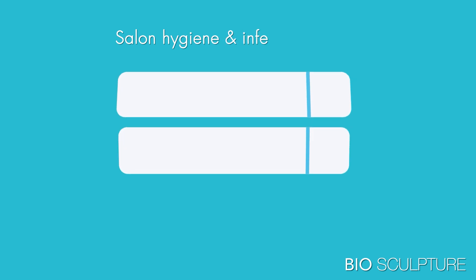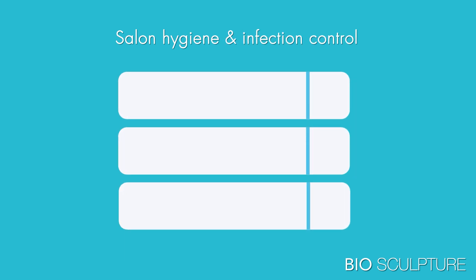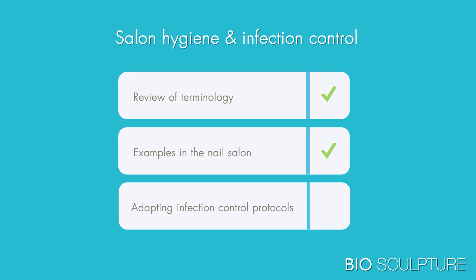What we're going to do today is divide the discussion into three sections. First of all, we're just going to be reviewing some of the terminology as it relates to infection control. Secondly, we're going to see how those things come into play in the salon environment and specifically at the manicure station. And thirdly, we will talk about how things might change going forward in the steps that we might have to implement as we are trying to open up our salons in the future.